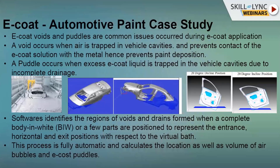This is a fully automatic process that calculates the locations as well as the volume of air bubbles. When you get the results, you have to highlight those issues back to the body engineers. You apply different angles - decline position, incline position - to ensure these issues are captured early so that manufacturing quality problems are minimized.